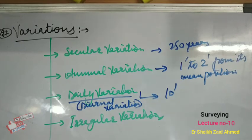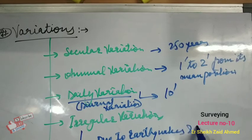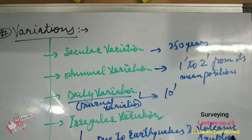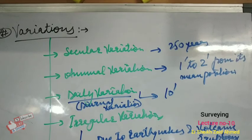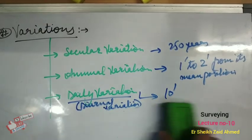The fourth type is irregular variation. Magnetic storms occur due to earthquakes and volcanic eruptions, resulting in changes in the magnetic meridian. Such changes can be up to 1 to 2 degrees. This is called irregular variation. These were all the types of variations in magnetic declination.